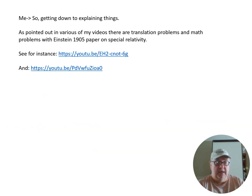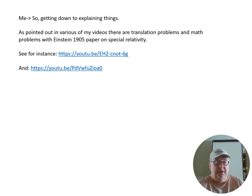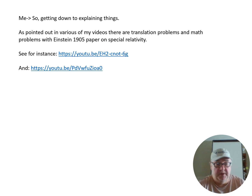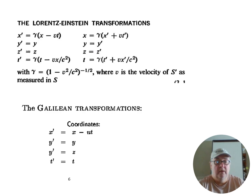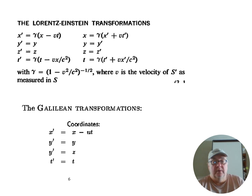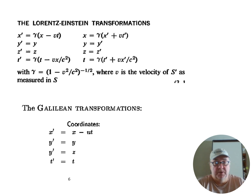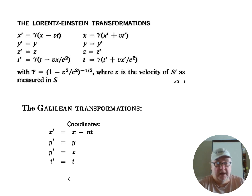Getting down to explaining things: I've pointed out there are problems with translation and mathematics in Einstein's 1905 paper on special relativity, and I've done various videos on that. This is the basic maths — these are the Lorentz-Einstein transformations, sometimes just called Lorentz transformations, and the Galilean transformations.